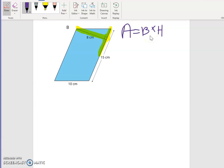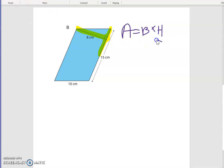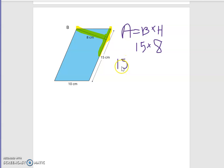So I am going to input into my formula 8 is my height, and I am going to input into my formula 15 for my base. And I am going to do 15 times 8, and my final answer for area of this parallelogram is 120 square centimeters.